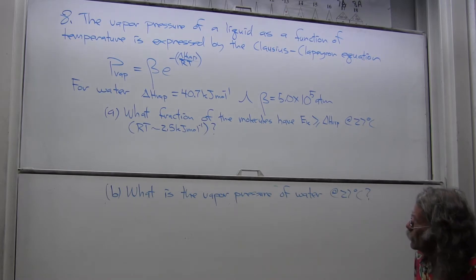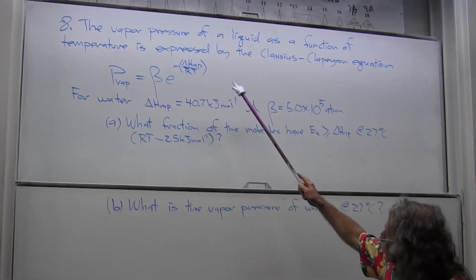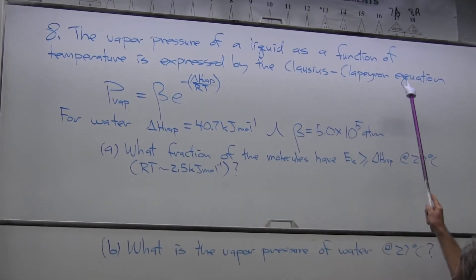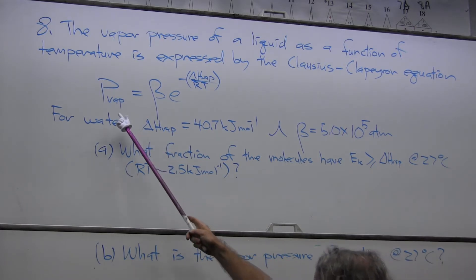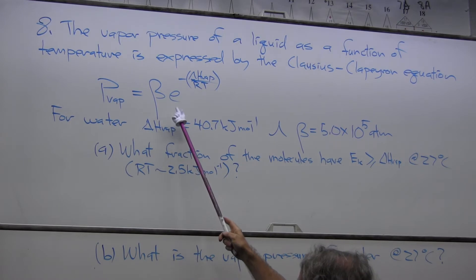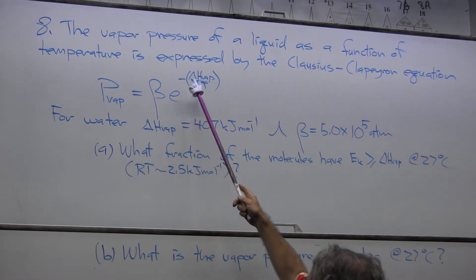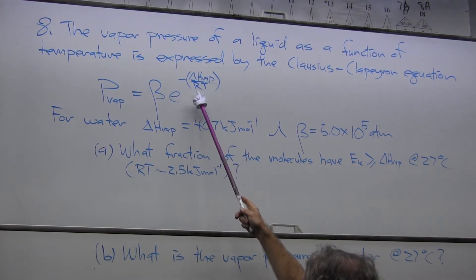The question is: the vapor pressure of a liquid as a function of temperature is expressed by the Clausius-Clapeyron equation which is that the vapor pressure is equal to beta times an exponential term, E to the minus delta H vaporization divided by RT.